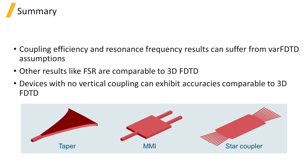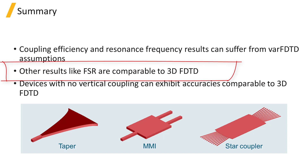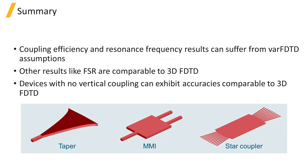In summary, although some properties of the device such as the coupling coefficient between the straight waveguide and the ring may suffer from approximations of the VARFDTD method, other results like the free spectral range are comparable to 3D FDTD. The trends in the device performance due to varying design parameters will also be the same as for 3D FDTD simulations, with a much smaller simulation time. The ring resonator is a particular case where the effect of the approximations of the VARFDTD method can be seen clearly.